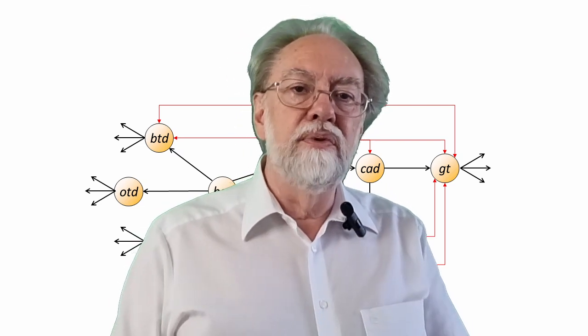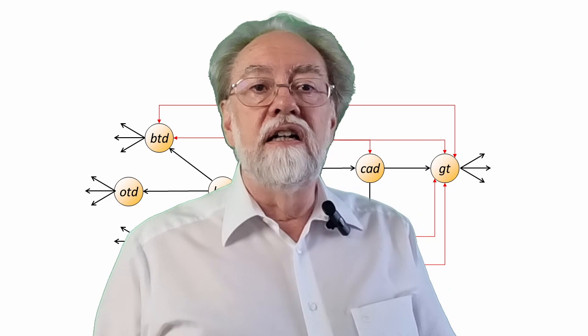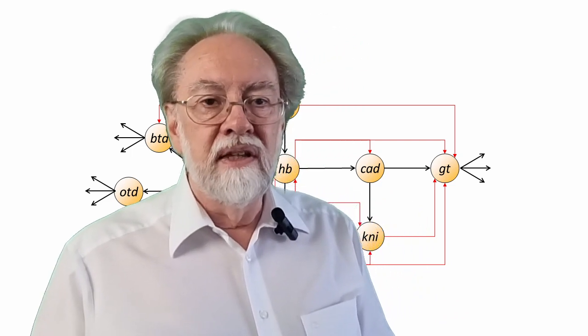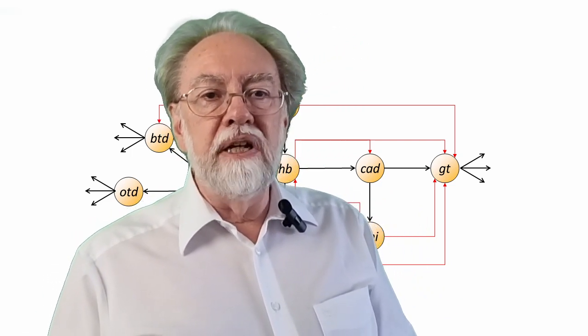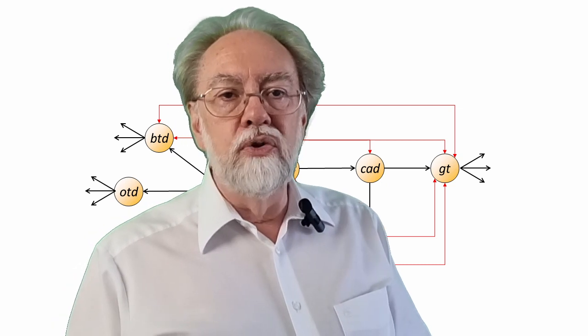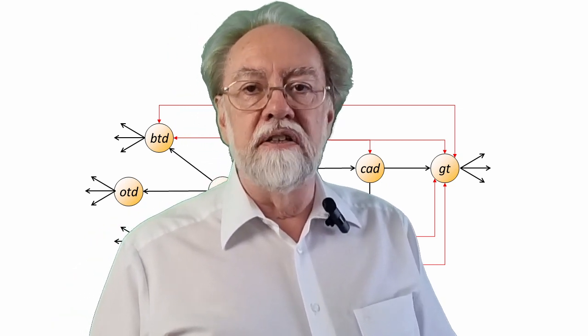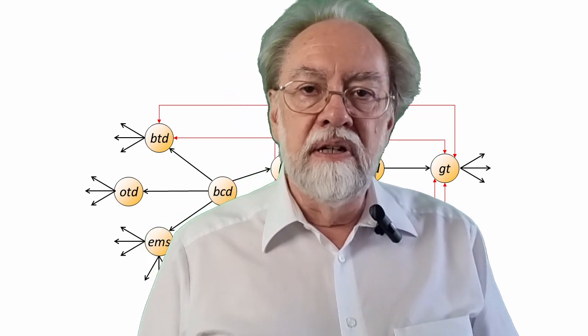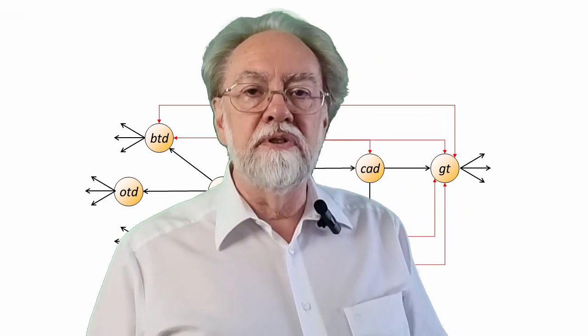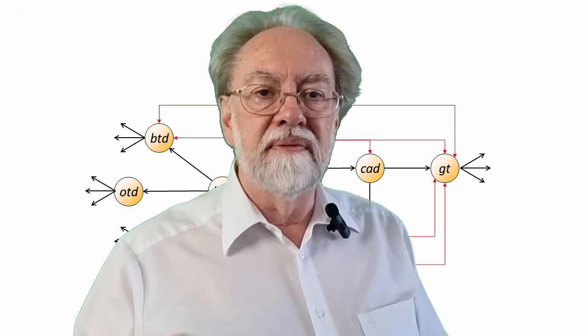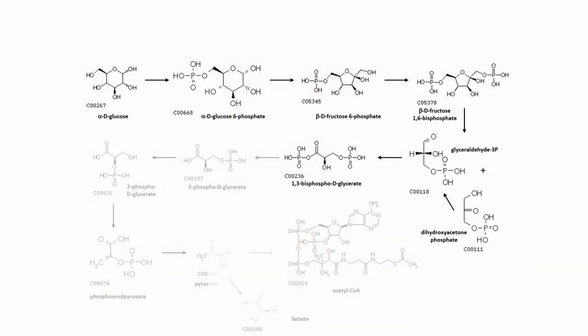The last kind of network we want to have a look at are the metabolic networks. In the usual way of displaying them, metabolites, usually small organic molecules, are converted into each other. As an example, let's have a look at the first steps of glycolysis. This is how the chemistry of the involved metabolites looks like, but we take liberty to abstract that bit to the abbreviations of the corresponding chemical names as symbols.